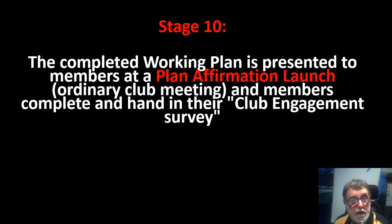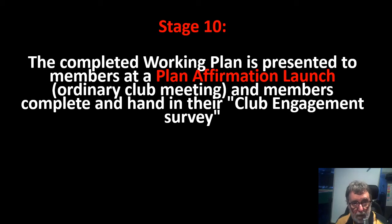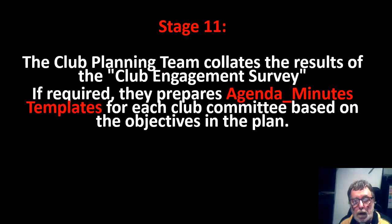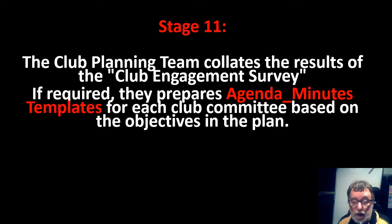Stage ten is where the completed plan is presented to club members at what we call a plan affirmation launch. If desired, members could be asked to complete their engagement surveys on the spot at that meeting if they haven't already submitted them. Members will have been emailed the plan, but we have a little celebration — maybe a toast to the launch of the new strategic and action plan. Stage eleven involves the planning team collating the engagement survey and sending the results to club chairs and anyone else who can benefit from that information. They also start the process of developing agenda and minutes templates for each of the club focus area committees.